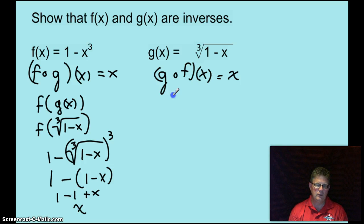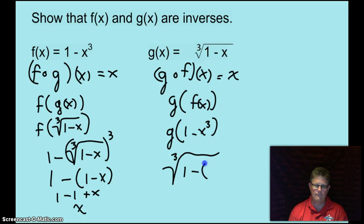Now going back the other way G dot F of X same thing as G of F of X. So take F of X and throw it in for where X is. We have to find out what G of 1 minus X cubed is. So the cube root of 1 minus 1 minus X cubed.